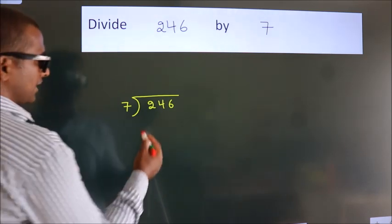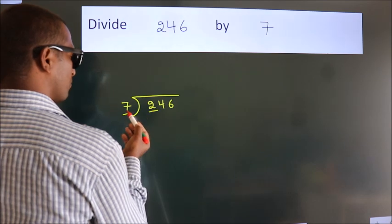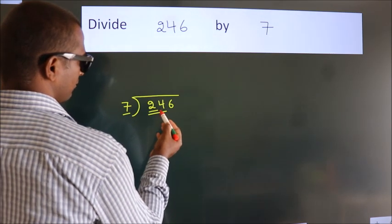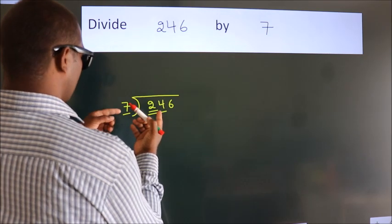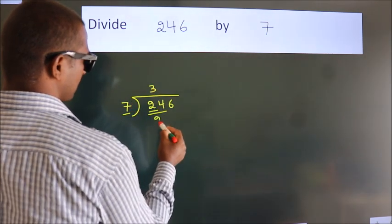Next, here we have 2. Here 7. 2 is smaller than 7, so we should take 2 numbers: 24. A number close to 24 in the 7 table is 7 threes, 21.